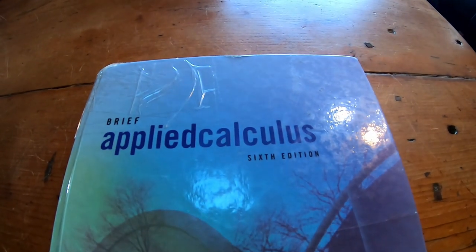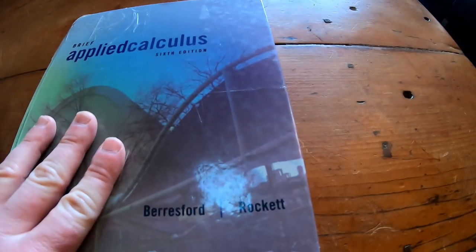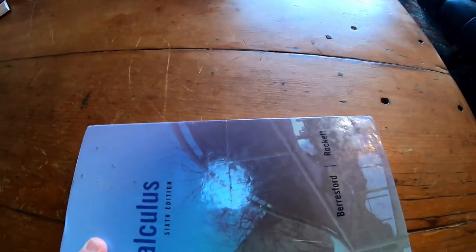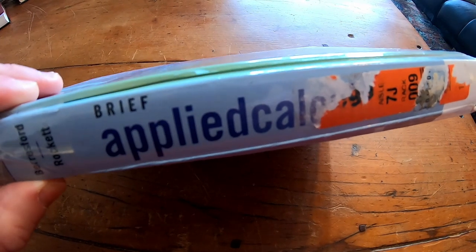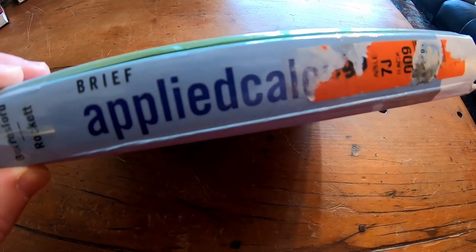This is called Brief Applied Calculus, and this is the one by Beersford and Rocket. And the wonderful thing about a book like this is that it's written for people who don't know any trigonometry. You might say, well, how can you learn calculus without trig?